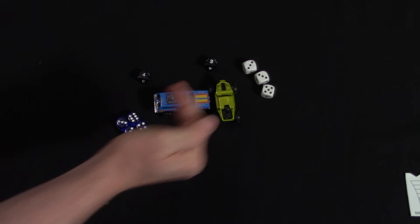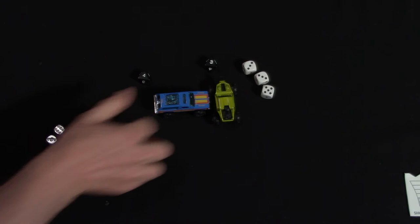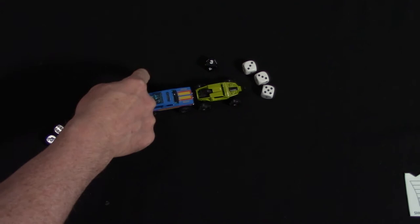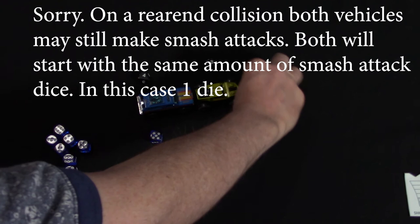Now that's a side swipe. What happens if it's a tailgating type situation where this one smashes up behind it? In this case you subtract the speeds, four minus three. This one's going to get one die, this one's going to get none because it's going slower.